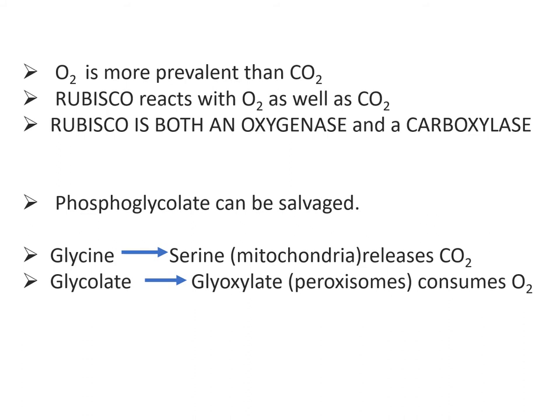Since oxygen is more prevalent than carbon dioxide, this is a significant issue. Phosphoglycolate is first converted to glycolate and then transferred to the peroxisome, where it is oxidized and converted to glycine. Glycine is then transferred to mitochondria, where two molecules of glycine are converted to one molecule of serine with the loss of carbon dioxide and ammonia. The serine is then returned to the peroxisome, where it is converted to glycerate, and finally the glycerate is transferred back to the chloroplast, where it re-enters the carbon cycle.